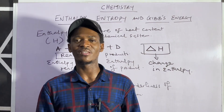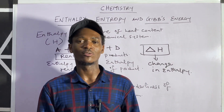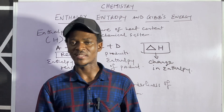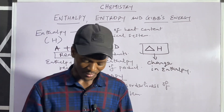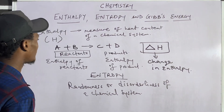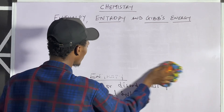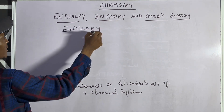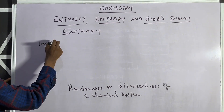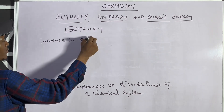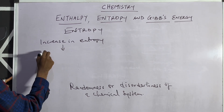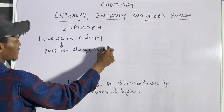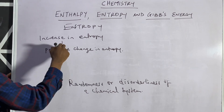When I say measure of randomness or disorderliness, I'm referring to how a reaction can be patterned. There are some reactions that are literally scattered, and such reactions are known as reactions that have an increase in entropy, or you could say that the entropy change is positive. When you see the words 'increase in entropy,' it simply means positive change in entropy — they are the same.